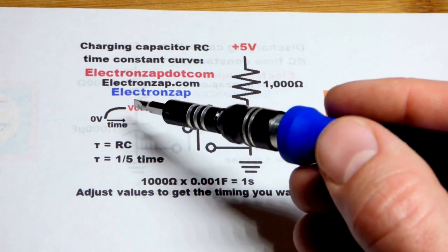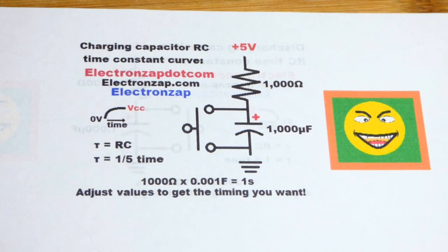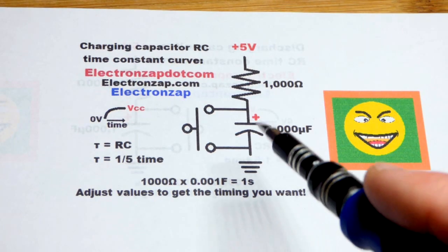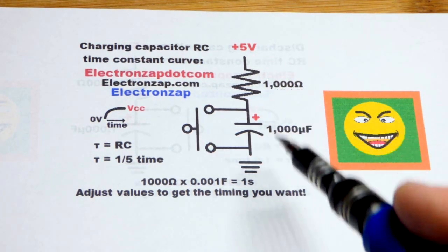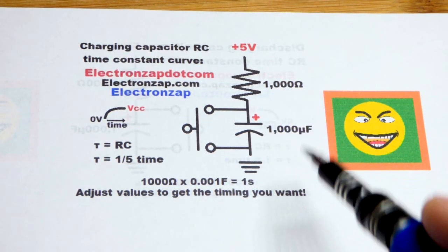So after five of them it's like 99.99% charged, you consider it done at that point. You can adjust the values of the capacitor and resistor however you want. A thousand microfarad is pretty close to the maximum you normally use for basic electronics.